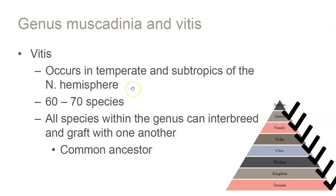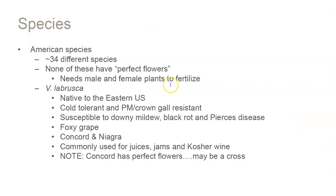Moving on from Muscadinia, looking at Vitis — it occurs in temperate and subtropical areas of the Northern Hemisphere. We have roughly 60 to 70 species that fit within Vitis. All species within the genus can be interbred and grafted with one another. We do have American species of Vitis — about 34 different species — and none of them have perfect flowers, meaning they need male and female plants to fertilize.